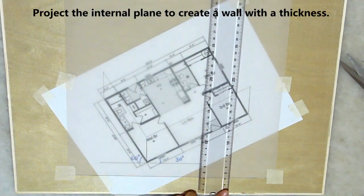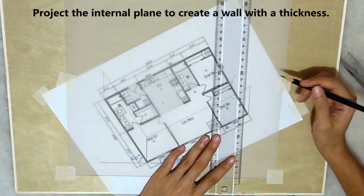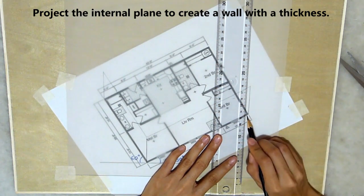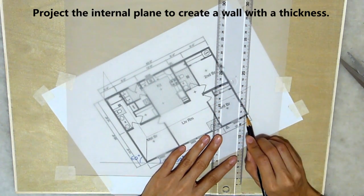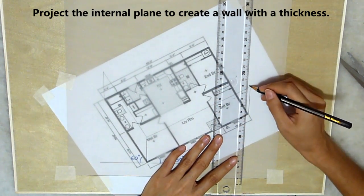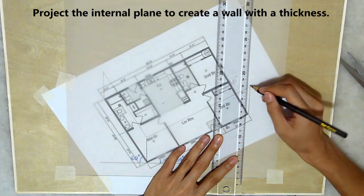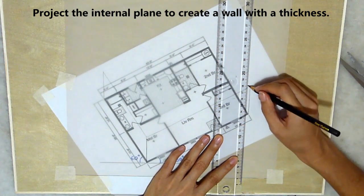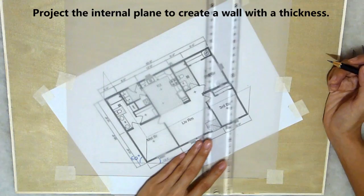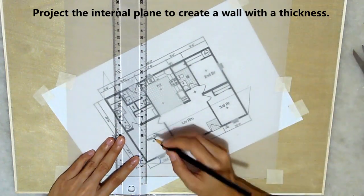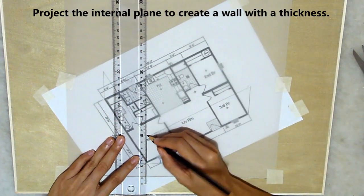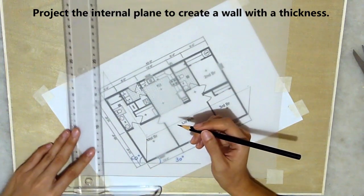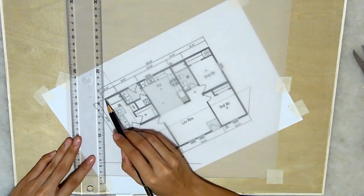So I repeat the same process except that this time, I'm taking the reference from the inner corner of the wall and take a 4m height to scale and just mark it there. Do the same for this end and I just mark it there.